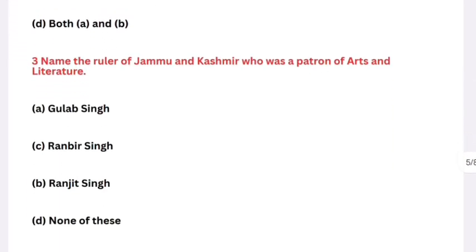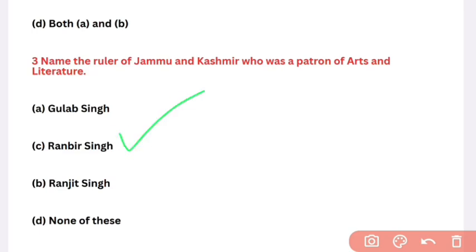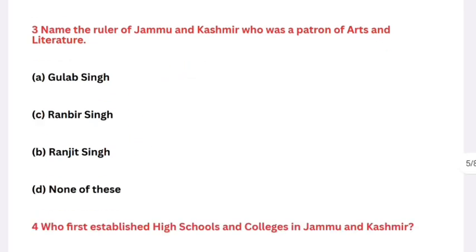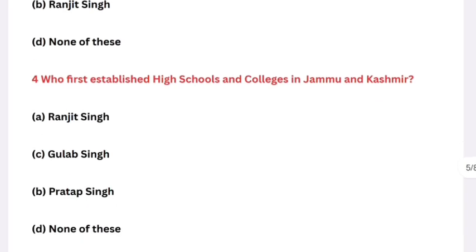Question 3: Name the ruler of Jammu and Kashmir who was a patron of arts and literature. Options: Gulab Singh, Ranbir Singh, Ranjit Singh, Nanabha. The right answer is Ranbir Singh — he was the patron of arts and literature.